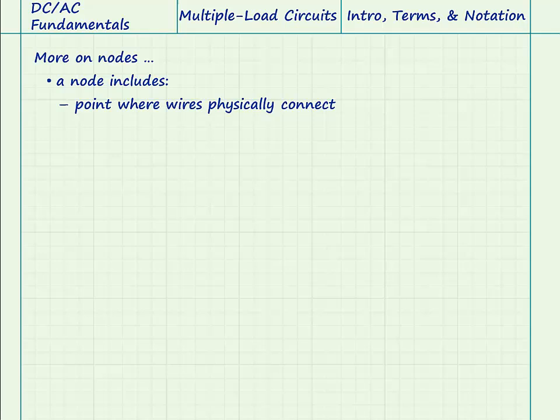A node includes the point where wires are physically connected together, and also the wires themselves, all the way to the beginning of the next component. For example, here again are four resistors that each have one of their terminals connected together. This forms a node that includes the wires connected to the body of each resistor during manufacturing, and also any wires used to connect them together.